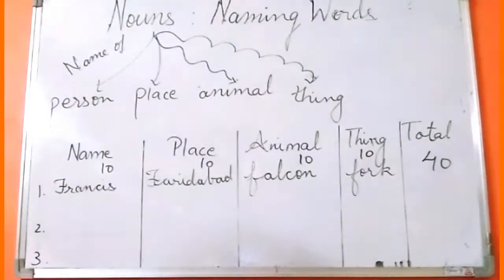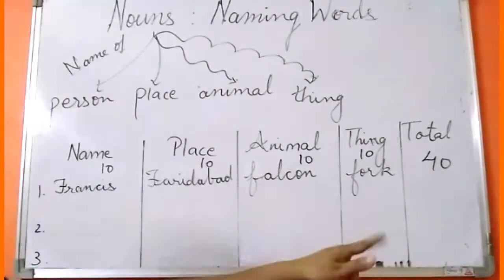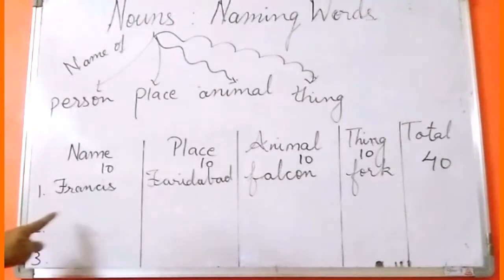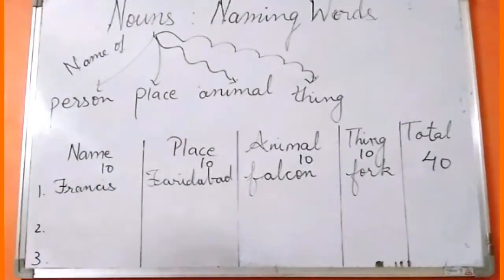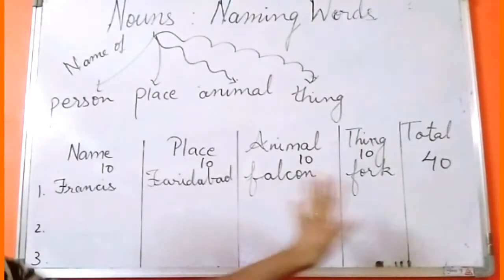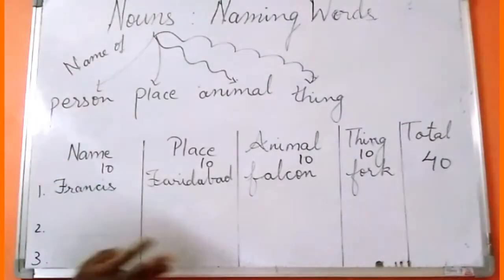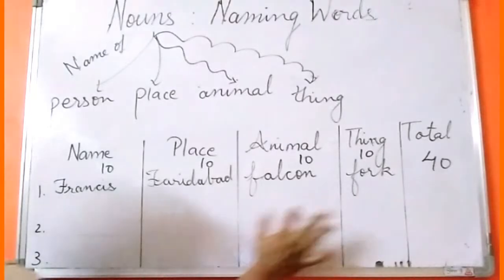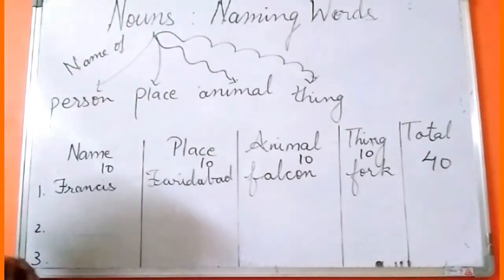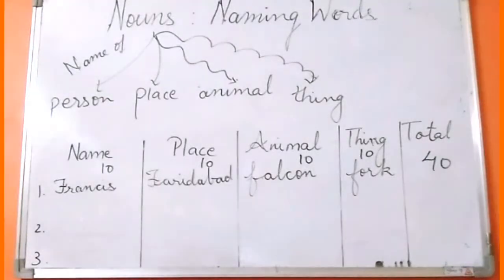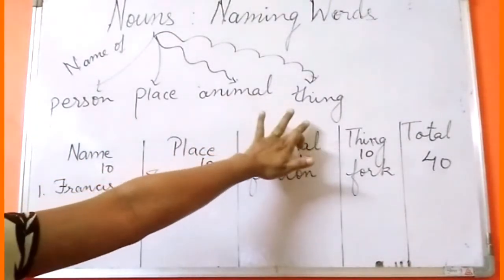The idea was to write as unique a name as possible so that you collected maximum points. This was a wonderful way of learning your nouns and also of increasing your vocabulary. You would see that somewhere I have written F in capital and some places in small letters — we will discuss that in a few moments. A noun is called as a naming word and it is the name of a person, place, animal or thing.